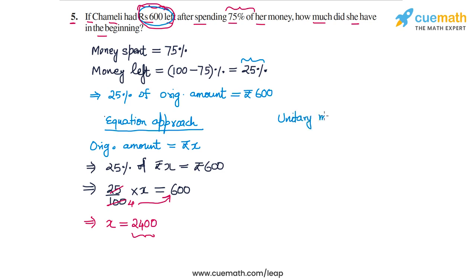The other approach to find the same answer is the unitary method approach. In this approach, we observe that 25% of the original amount is 600. So we will write 25% of original amount is Rs. 600.